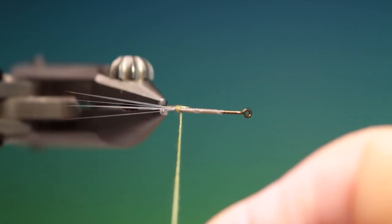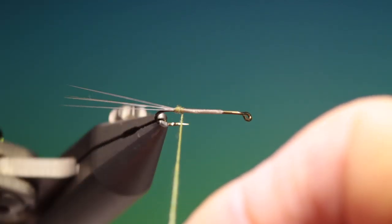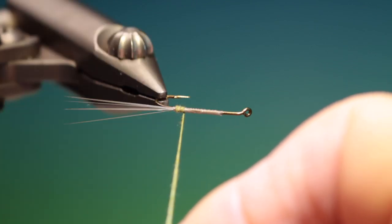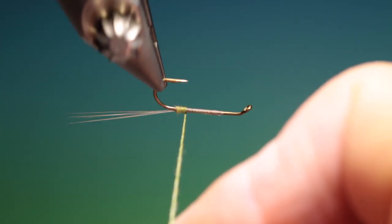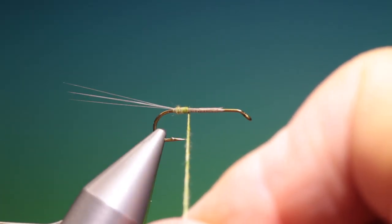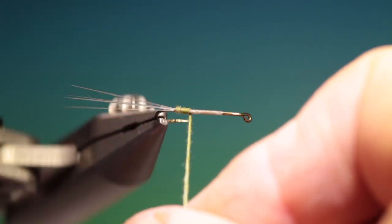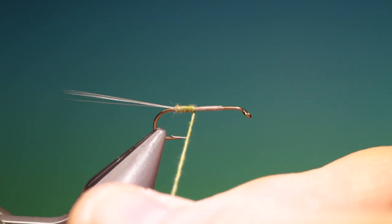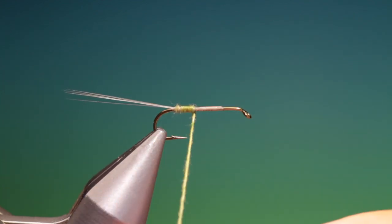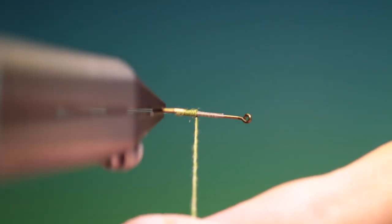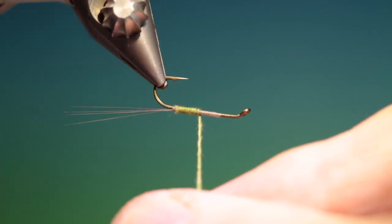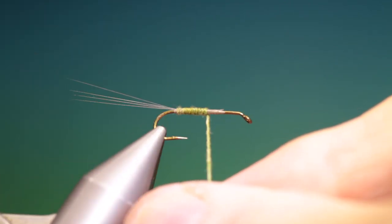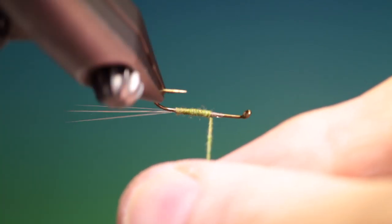Now we want this all nice and tight and we'll hold our dubbing in position and we'll rotate the vise, because if you use your bobbin as you would normally by wrapping it the dubbing will come undone and you won't achieve this nice segmented taper. Let's tighten that up again, we want to go about two thirds of the way up the hook shank with this.